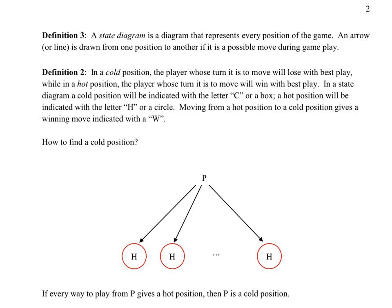Within the state diagram, there are hot and cold positions. In a cold position, the player whose turn it is to move will lose with best play. So if you're ready to move and you're sitting upon a cold position, staring at the game, even if you play the best that you can possibly play, you might still end up losing the game.